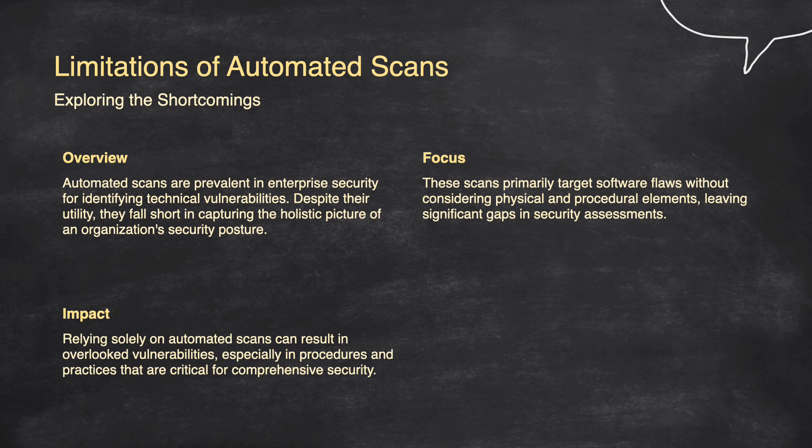Regarding impact: relying solely on automated scans can result in overlooked vulnerabilities, especially in procedures and practices critical for comprehensive security. These scans focus mainly on technical flaws, missing how issues affect interconnected systems and ignoring weaknesses in human behavior and physical security. This oversight can leave significant gaps, as important vulnerabilities in the way tasks are performed and security practices are implemented may go undetected. Thus, automated scans should be part of a broader strategy that includes human expertise and manual assessments for a complete security evaluation.